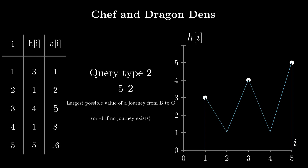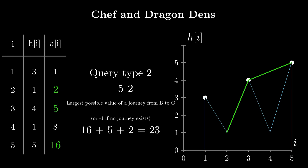If B=5 and C=2, the maximum value of a journey from 5 to 2 would be from 5 to 3 and then from 3 to 2. This would give us a value of A[5] + A[3] + A[2] = 16 + 5 + 2 = 23.